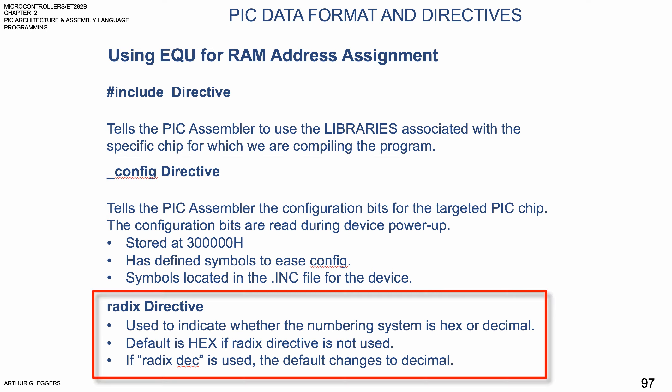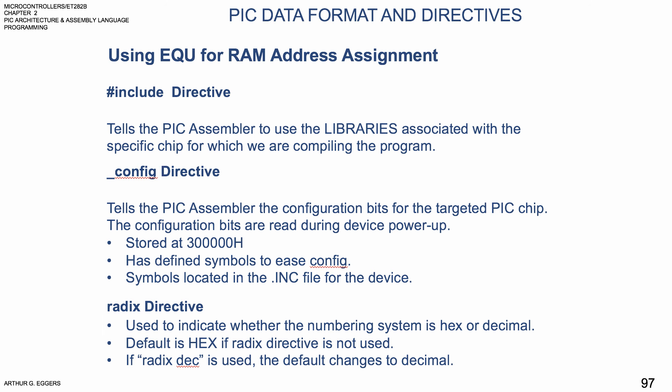The radix directive allows us to indicate whether the numbering system is hexadecimal or decimal. The default is hex if we do not use the radix directive. If we do use the radix directive, the default representation will change to decimal, and any unformatted number will be interpreted as decimal rather than hex.